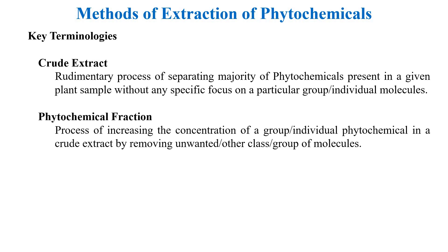A phytochemical fraction is a secondary step or next step to crude extract. Crude extract contains all possible phytochemicals in the given material, whereas the phytochemical fraction means the number of phytochemicals has been reduced; however, the concentration of a specific class of molecules is increased drastically. This is done by removing unwanted or non-bioactive molecules from the crude extract. The best example is the curcumin fraction or curcumin capsule available in the market.